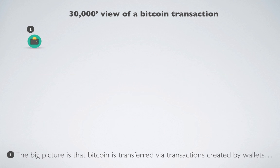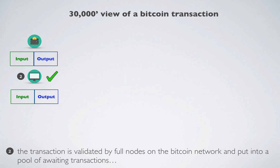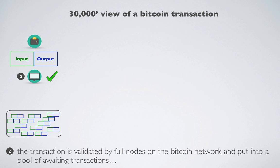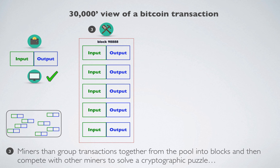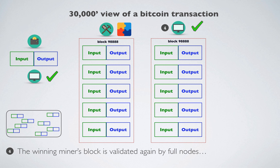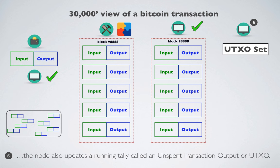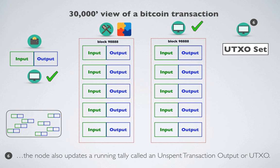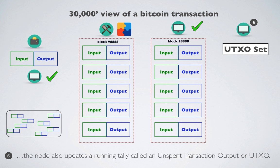The big picture here is that Bitcoin is transferred via transactions created by wallets. The transaction is then validated by full nodes on the Bitcoin network and, if valid, put into a pool of waiting transactions. Miners then group transactions together from this pool into blocks and compete with other miners to solve a cryptographic puzzle. The winning miner's block is validated again by full nodes and, if valid, the block becomes part of the blockchain. The node also updates a running tally called an unspent transaction output, or UTXO, tracking which outputs have been spent and which remain unspent.